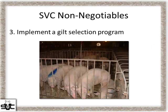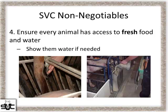Number three: implement a gilt selection program — make sure you're bringing in the highest quality breeding stock possible onto your farm. Number four: fresh food and fresh water. Brad brought up the classic example of a gilt in a farrowing crate whose water source is now above her head, when for her entire life before that farrowing crate it's been below her head. It's amazing how many times you can still see that pop up on a farm.